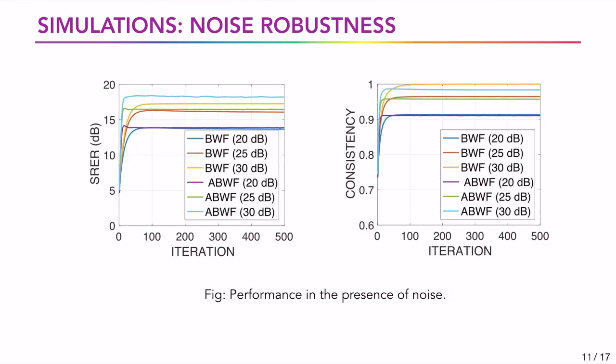Now, we assess the performance of the proposed algorithms in the presence of noise. We observe that both BWF and its accelerated variant give similar SRER and consistency after 200 iterations. For 30 dB, we get fully consistent signal showing its robustness in high SNR conditions. Even in the presence of noise, the accelerated BWF converges faster than the BWF.